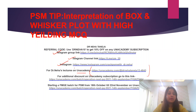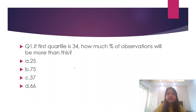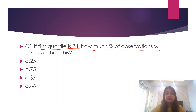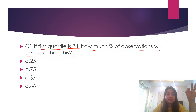Let us start with the tip of the day. We are trying to interpret a box and whisker plot. The first question: if the first quartile is 34, how much percentage of observations will be more than this? This was asked in one of the previous JIPMER papers. First of all, what do you understand by quartile?